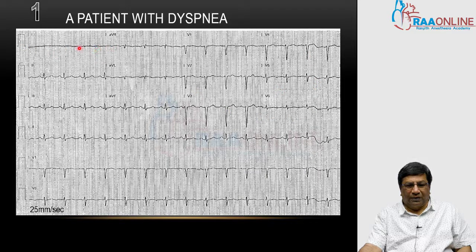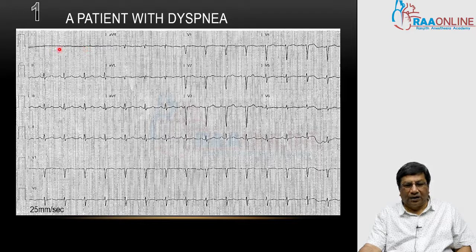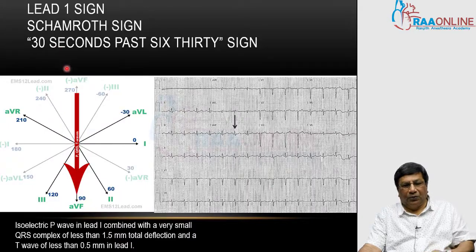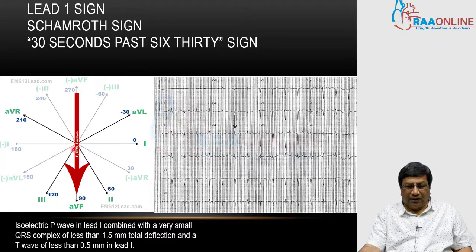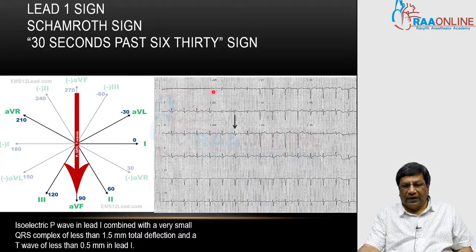When you look at V1 and L1, you might think there is a machine error because there are almost no complexes in L1 at all. Even after repeating the ECG many times, L1 looks the same. This is called the L1 sign or the Shamrath sign of a patient who has severe COPD. The L1 sign occurs because severe COPD shifts all axes — the P wave axis, T wave axis, and QRS axis — towards a vertical direction, towards lead AVF. Because all these complexes are directed towards AVF, the perpendicular lead L1 shows all complexes as equiphazic and very small. That's why it is called the lead 1 sign or Shamrath sign.